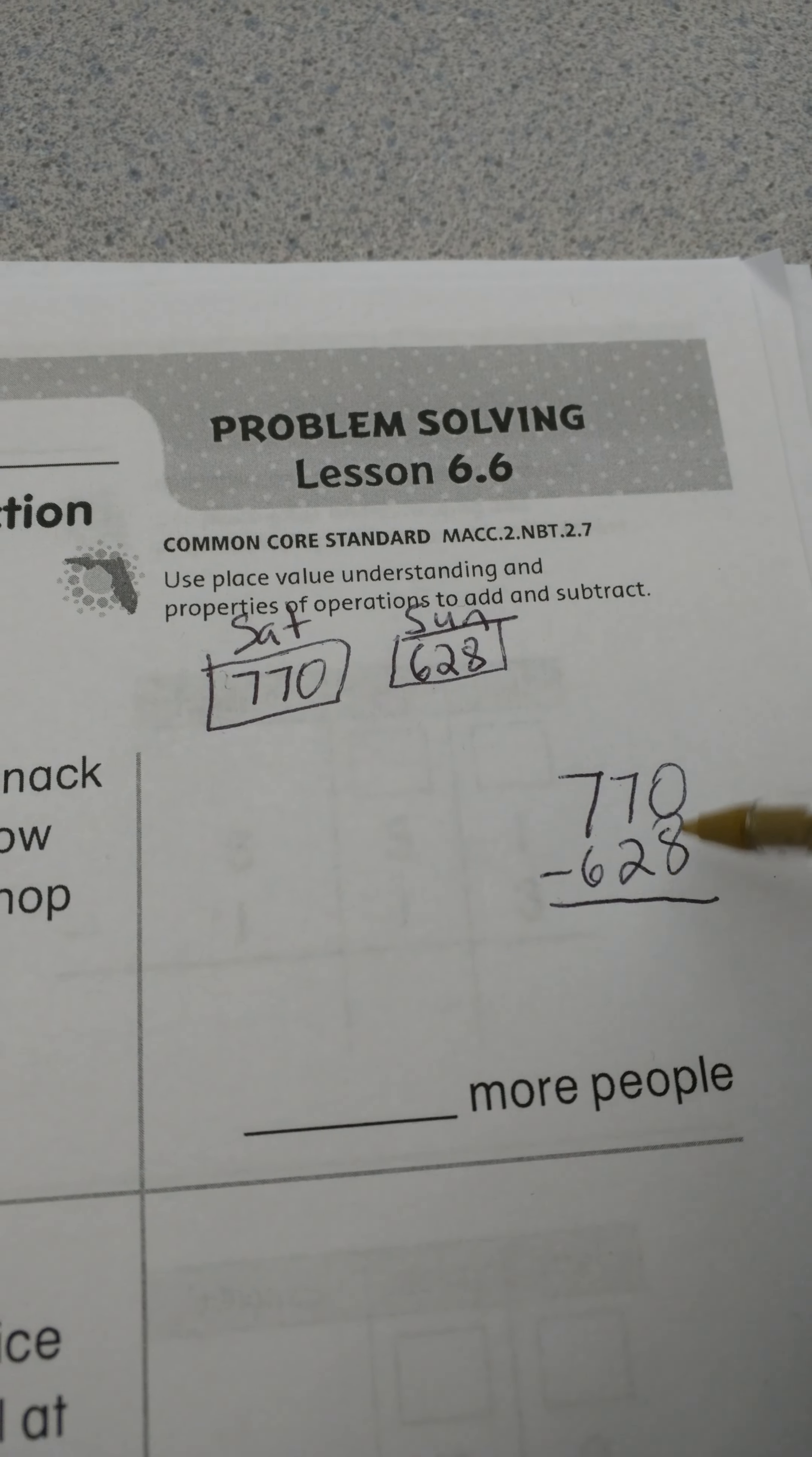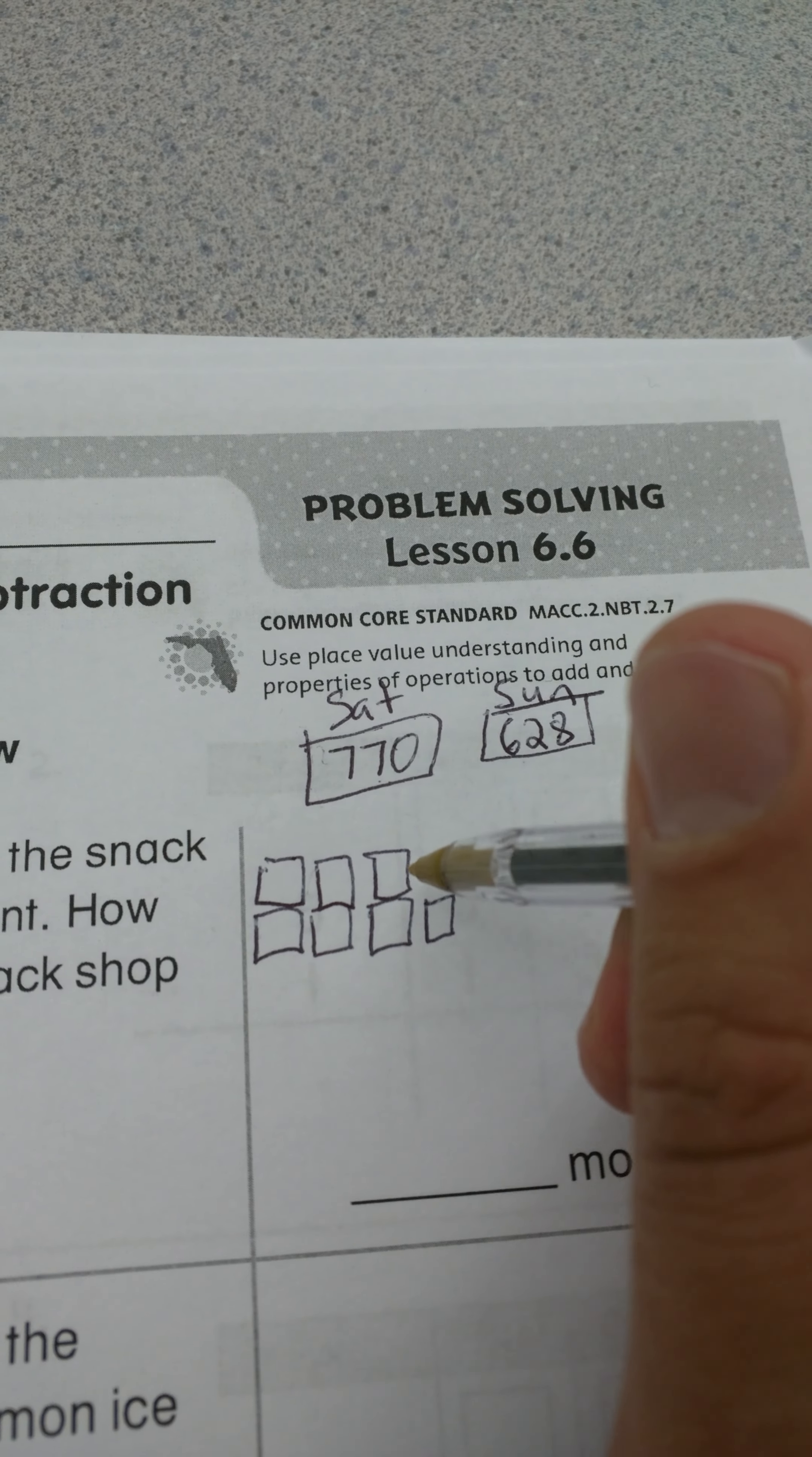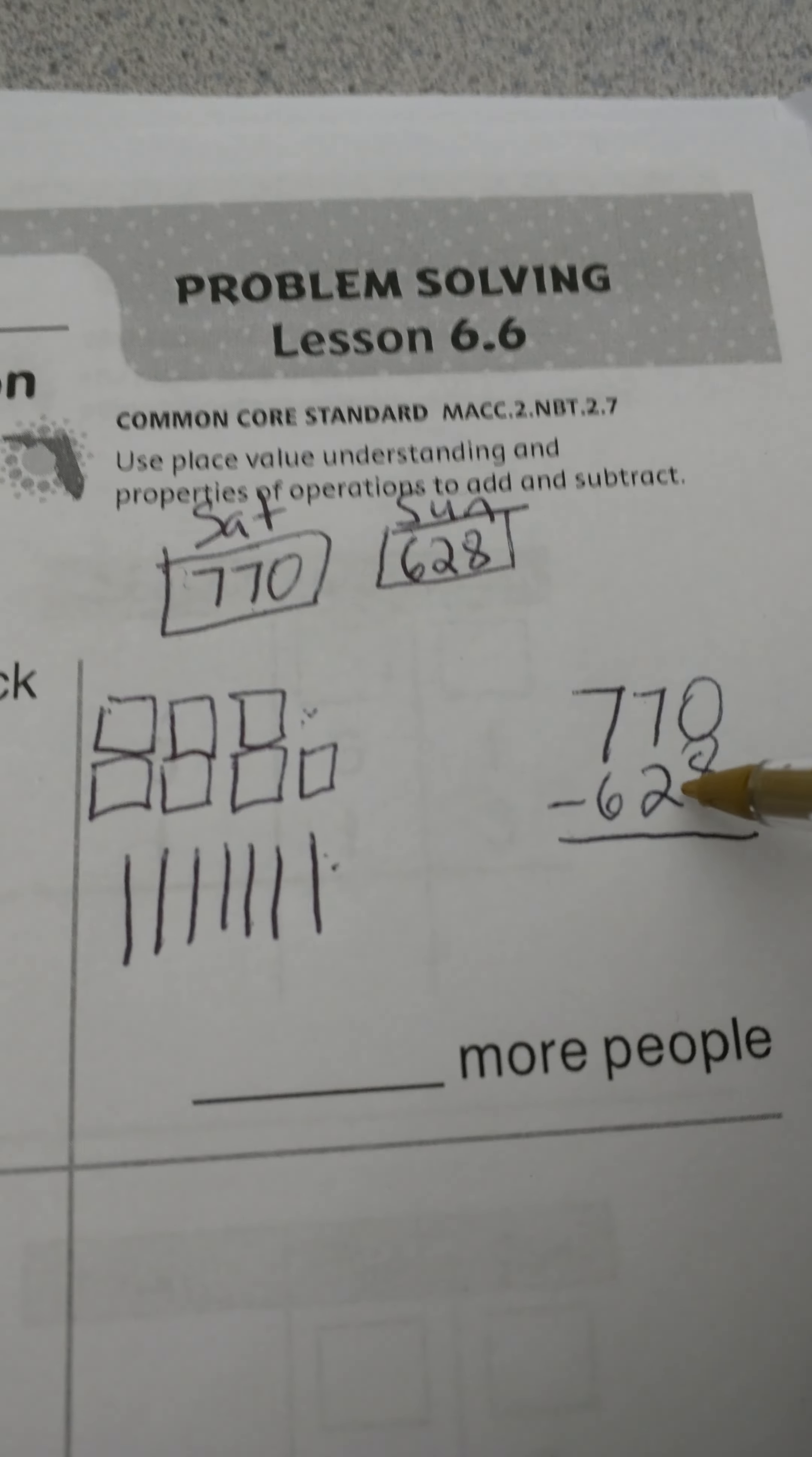I'm going to draw 770. This takes up a little bit more space because we have to draw these squares for 100. So I have 400, 500, and I'm making the larger number, 600 and 700. I have 7 tens. I'm just going to draw them down here for space: 1, 2, 3, 4, 5, 6, 7. So I have 770: seven hundreds and seven tens.